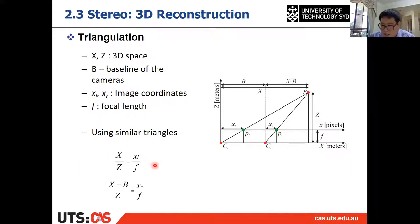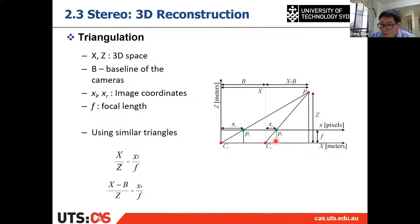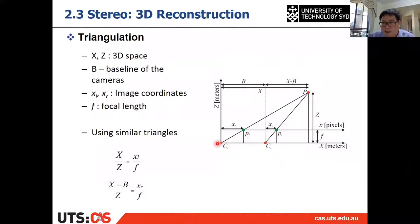Using a similar method for the right image, we get another pair of similar triangles. The focal length is f again, xR is the projection on the right image, Z is the same z-coordinate, and the x-distance for the right camera is X minus the baseline. The baseline is a very important property of the stereo camera — it is the distance between the two camera centers.